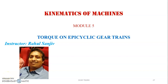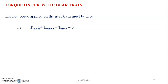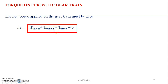Hello and welcome to the study of epicyclic gear trains. Today we are going to study about the torque on the epicyclic gear train. The net torque applied on the gear train must be zero. A gear needs input power, output power, and there is also a fixed gear. So the torque on the driver plus torque on the driven plus torque on the fixed gear is equal to zero. This is the first expression.